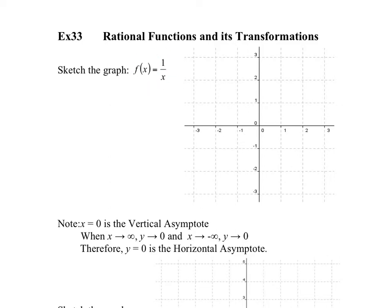When we sketch this graph, notice that when x equals 0, this is a non-permissible value — x cannot equal 0. So what happens here, since x cannot equal 0, what we're going to get is a vertical asymptote at x equals 0.